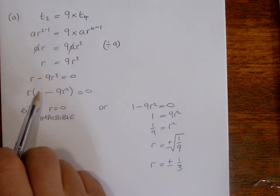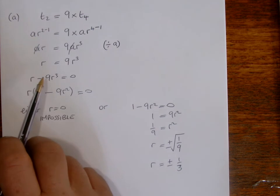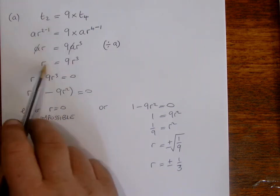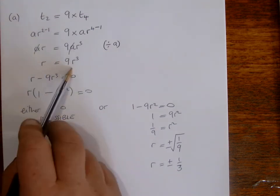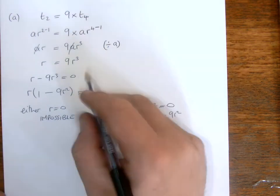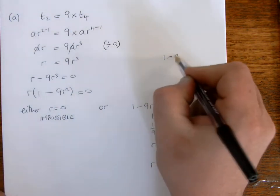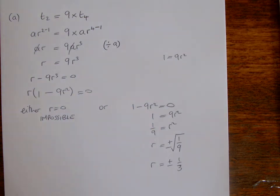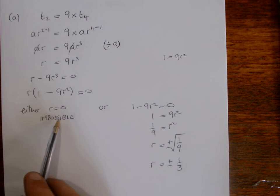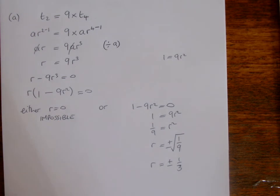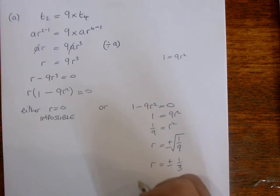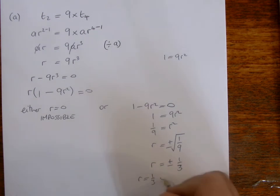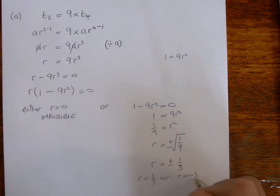The other way of working this out would have been to just divide by R here. So if you divide both sides by R, you'd end up having one equals nine R squared. And you're allowed to divide by R because R can't be zero. As we established there, it's impossible for R to be zero. Otherwise, we wouldn't have a geometric series. So those are the two possible values. Either R is positive third or R is negative third.